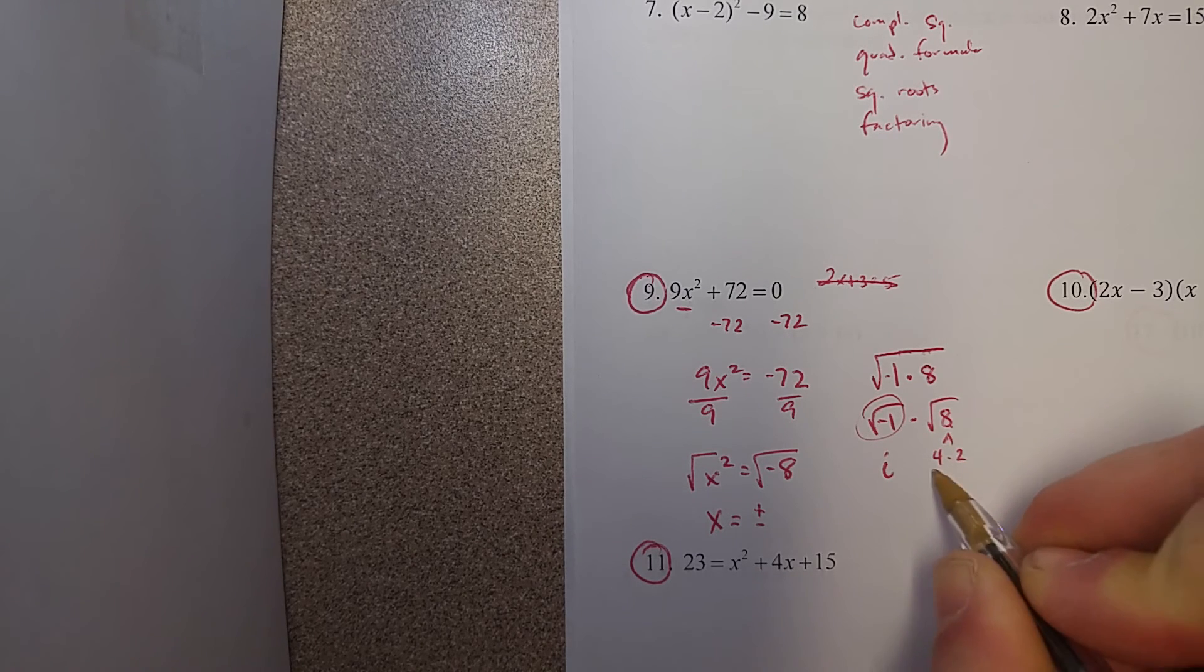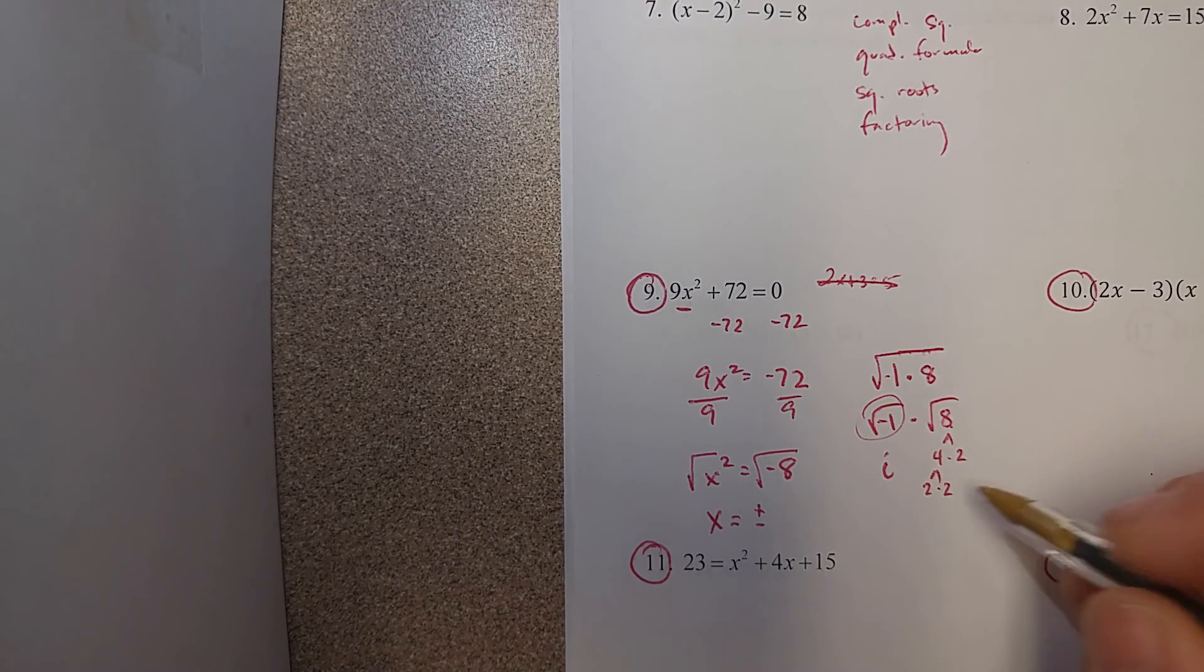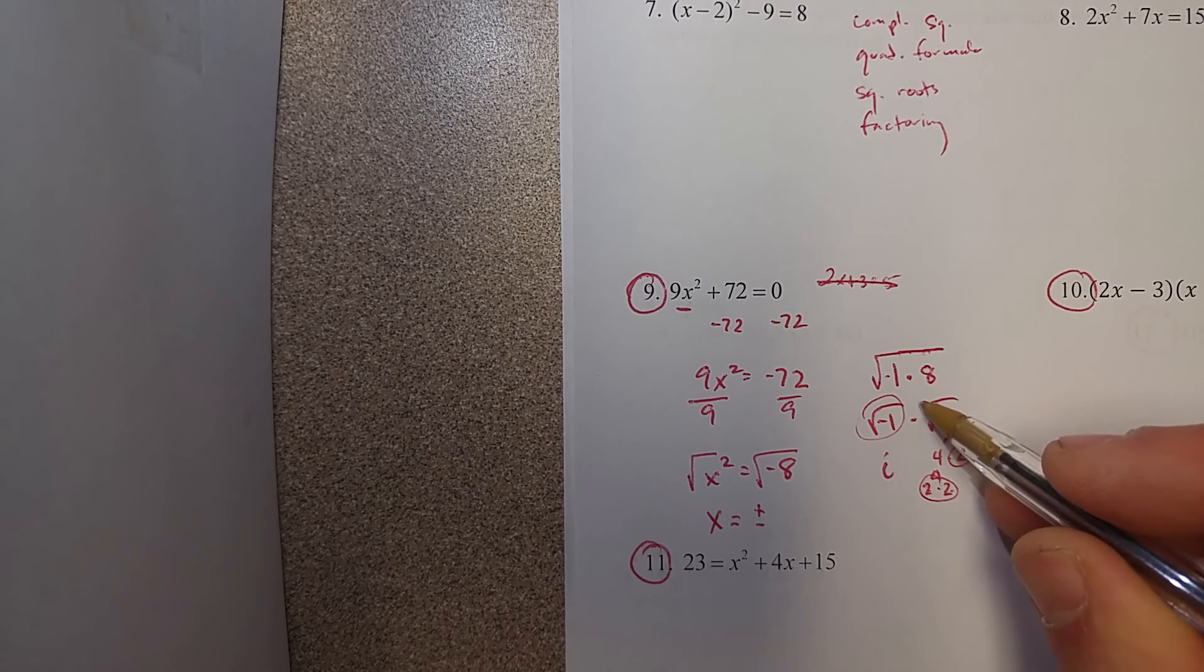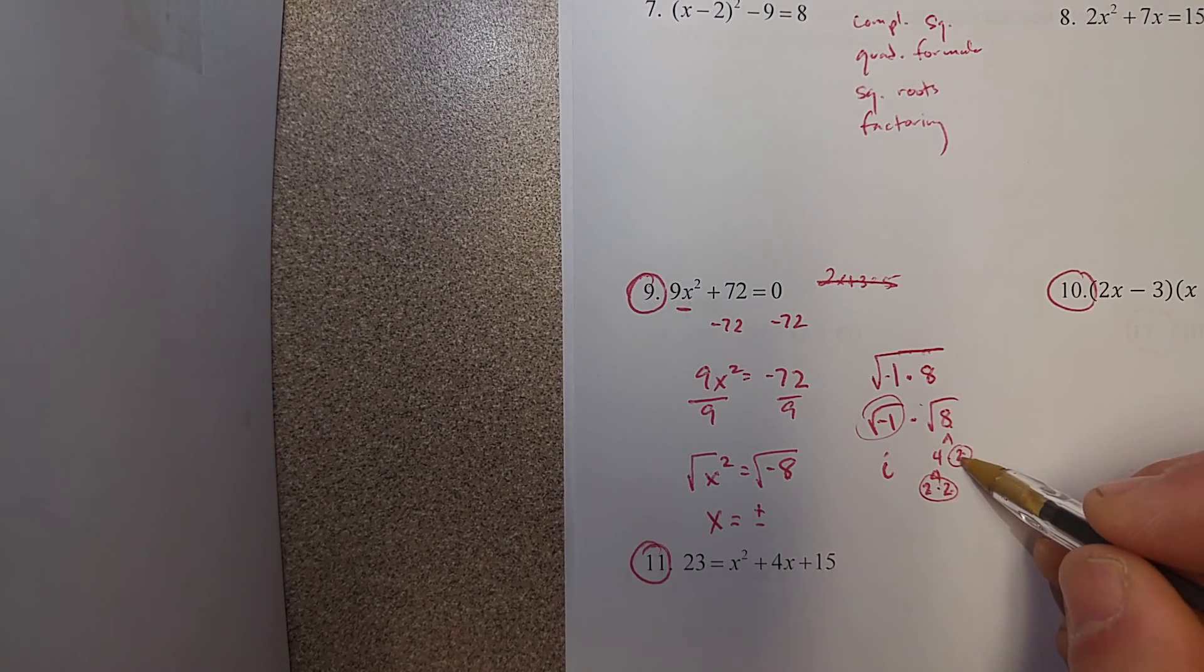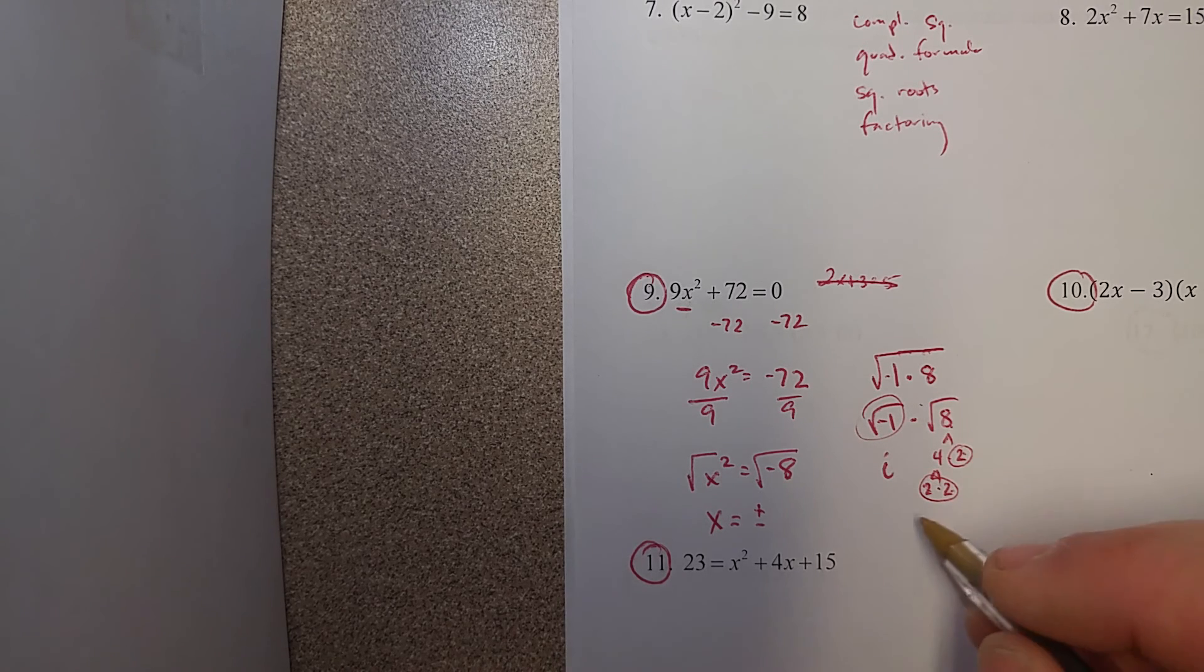If you break down 8, you get 2 times 2 times 2. We have one pair of 2s, which means a 2 comes out, and a 2 is still left inside. So we have a 2 that comes out with the i, and a 2 that is left under the radical.